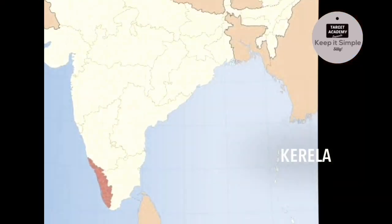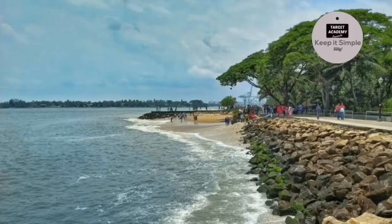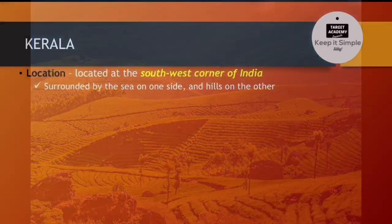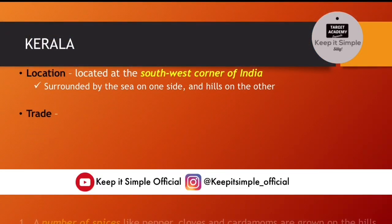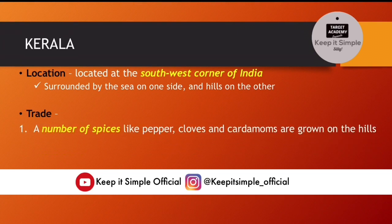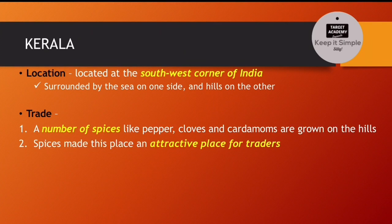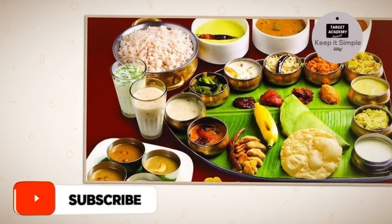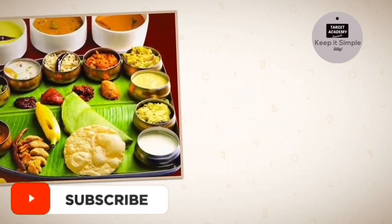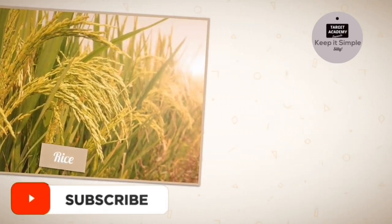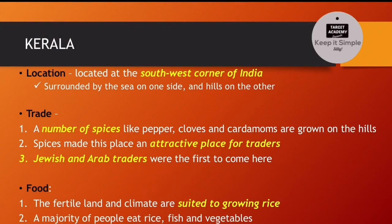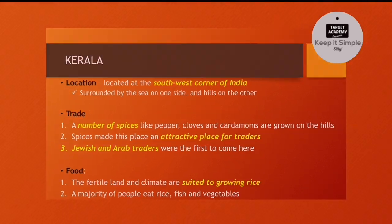Now we come to Kerala. Located at the southwest corner of India, it is surrounded by the sea on one side and hills on the other side — that is why Kerala is one of the most beautiful states in the country. A number of spices like pepper, cloves, and cardamoms are grown on the hills. क्योंकि यहाँ पे इतने सारे महंगे spices उगाए जाते हैं, इसलिए ये traders के लिए बहुत ही attractive जगह बन गई थी। Arab and Jewish traders were the first to come to this place. The fertile land and climate are suited to growing rice, and a majority of people eat rice, fish, and vegetables. So rice and fish form a major part of their staple diet.